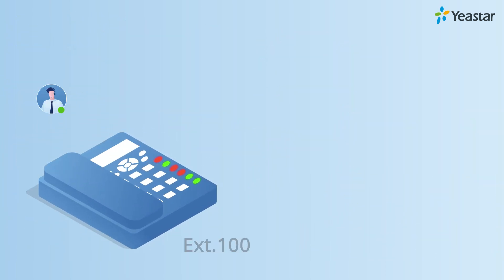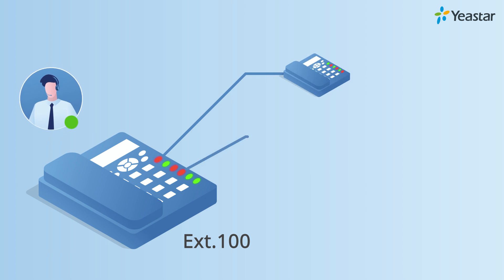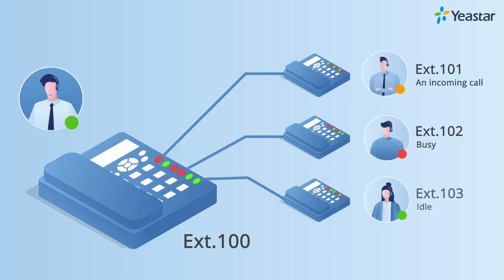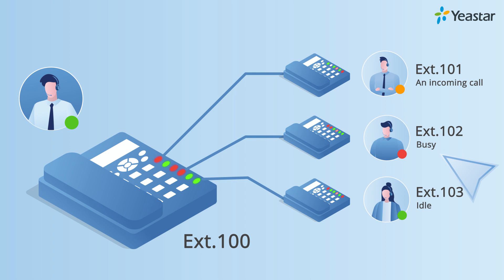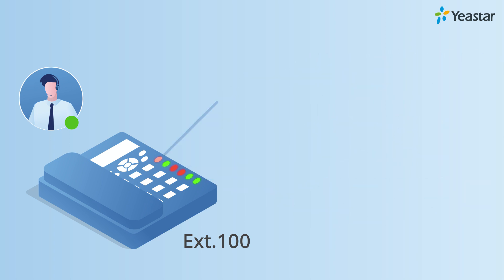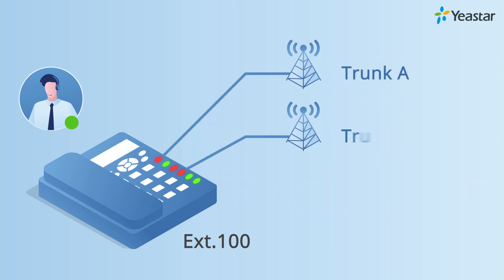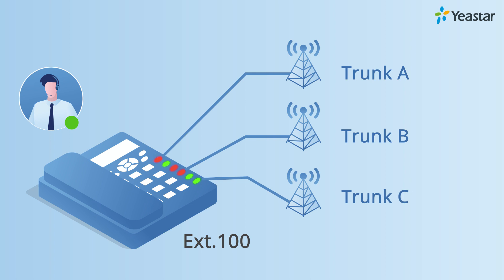With the presence information, the worker gets to know other co-workers' status intuitively. If a colleague is busy, the worker won't make a call or transfer a call to him, but will probably turn to another available worker. Besides that, BLF can also indicate the status of trunks, so the worker can know when the trunk is free to make outgoing calls.